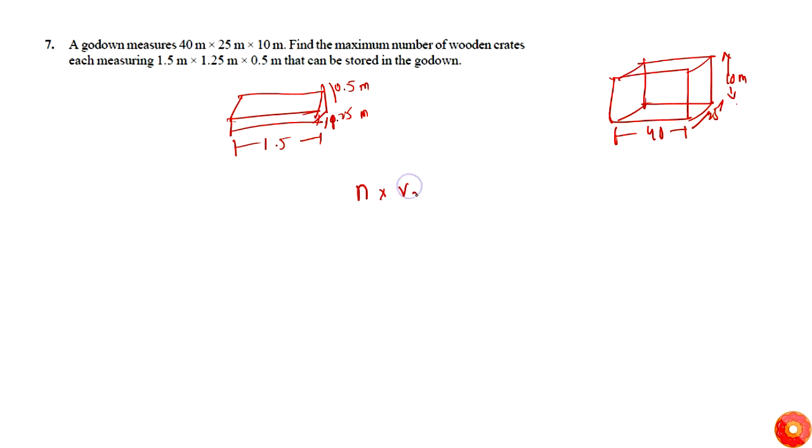Simply, if you put n wooden crates, then n into volume of each crate - that is summing up all the volume of n crates - we must fully exhaust the given go-down. So that should be equal to volume of go-down. Now we have to find the volume separately.